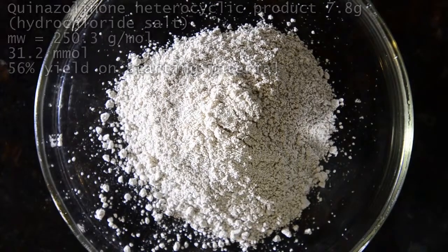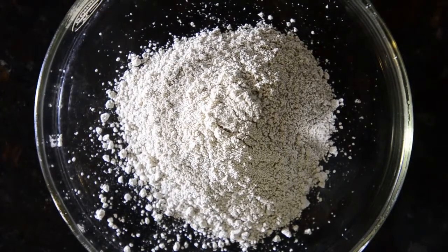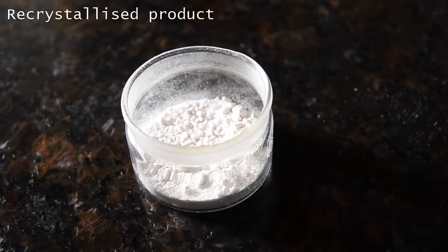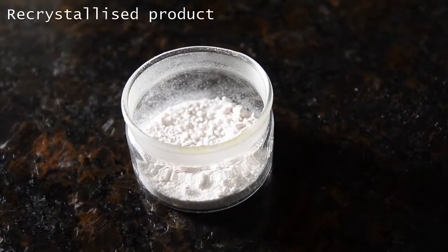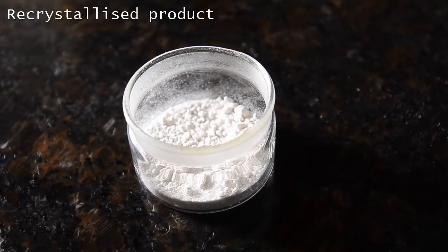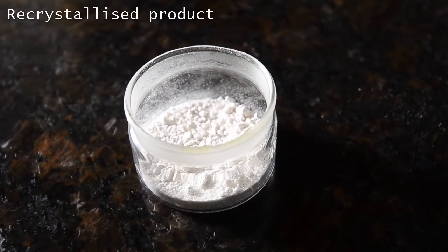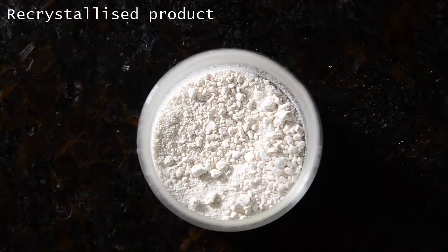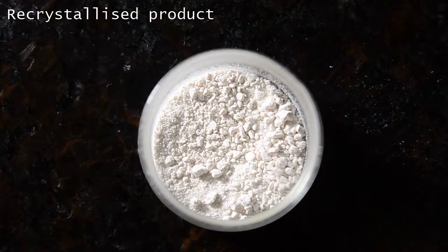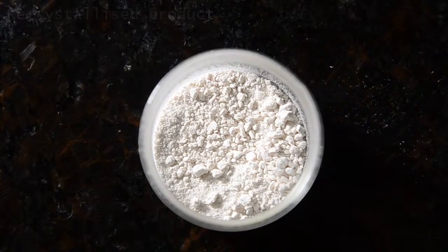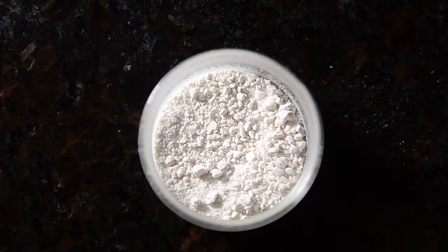To purify further you can recrystallize from hot acetone. This produces a pure white and fine microcrystalline powder like this. This reaction is a great example of how complex looking structures can be built up out of simpler building blocks with some clever cyclizations.